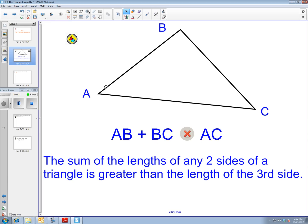If I take AB, the side up here, plus side BC, so if I take this side AB plus this side BC, it will be larger than AC.